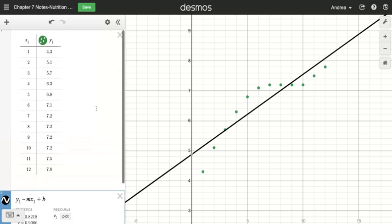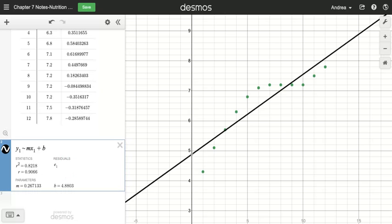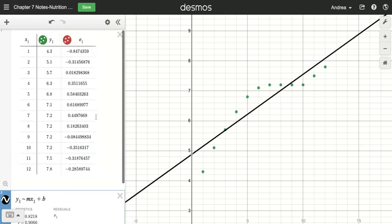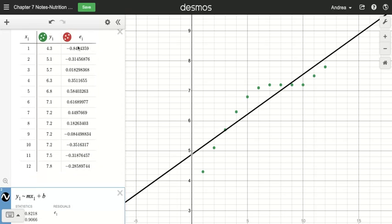Now in this problem, it will also ask you to plot the residuals. So to plot the residuals, we're going to click right here on this residuals where it says here, and we're going to click plot. Now when you do that, it's not really showing anything right now. You can't really see them yet, but it has added a column to your table of values.